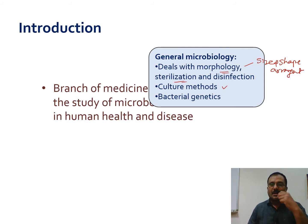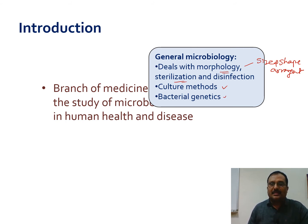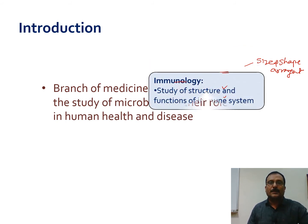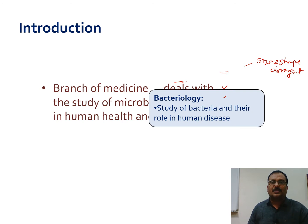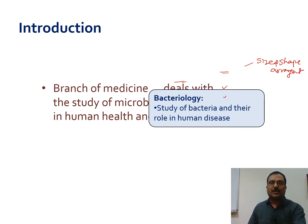Bacterial genetics is also covered — especially how bacteria can acquire antimicrobial resistance. The next branch is immunology, which studies the structure and functions of the immune system. Then there is bacteriology, the study of bacteria causing infectious diseases and their role in human disease.